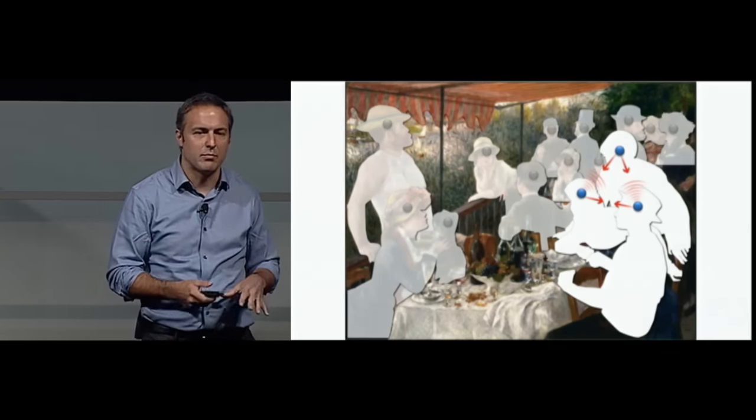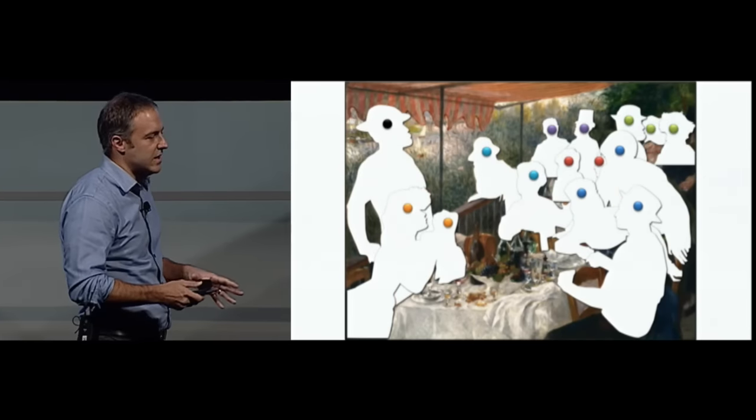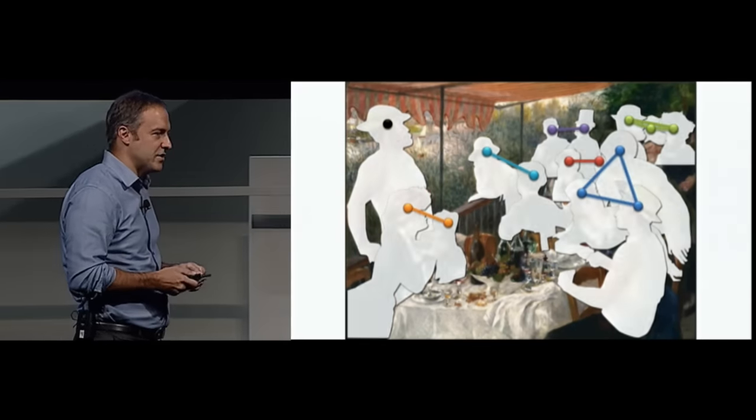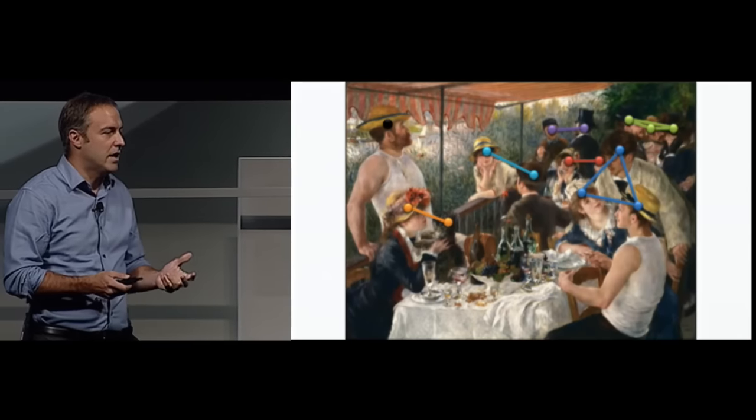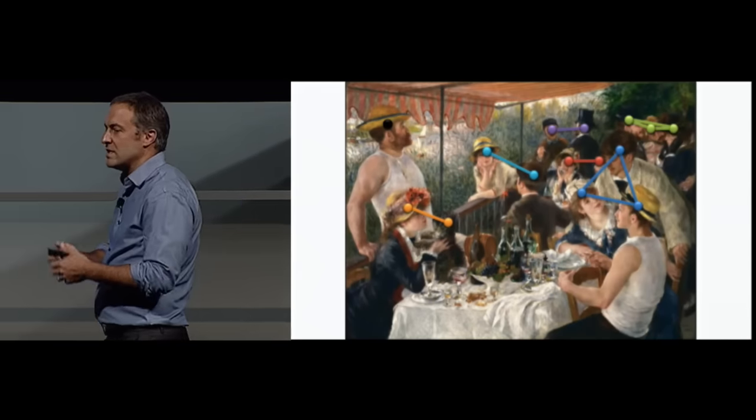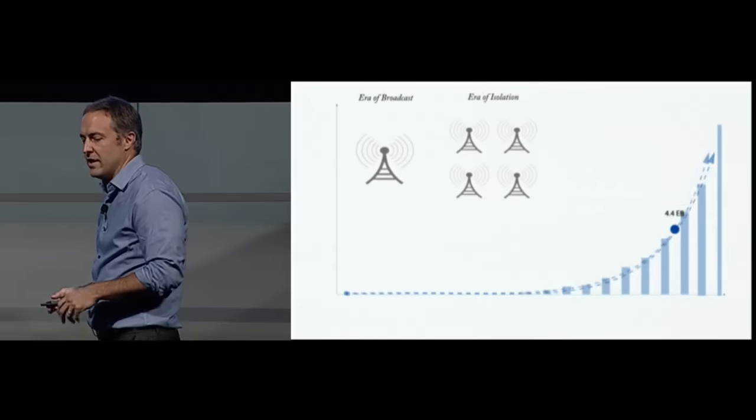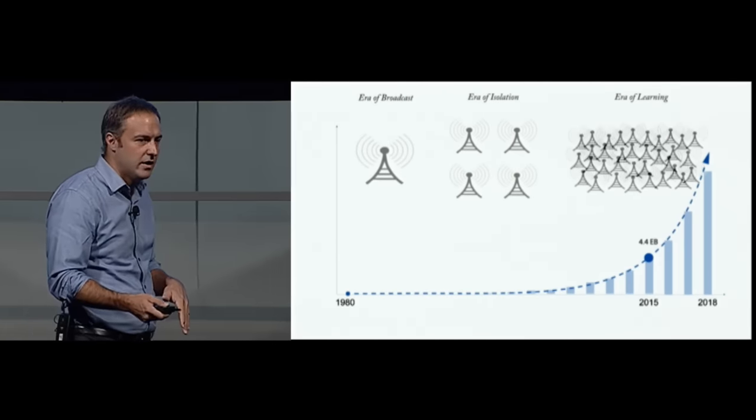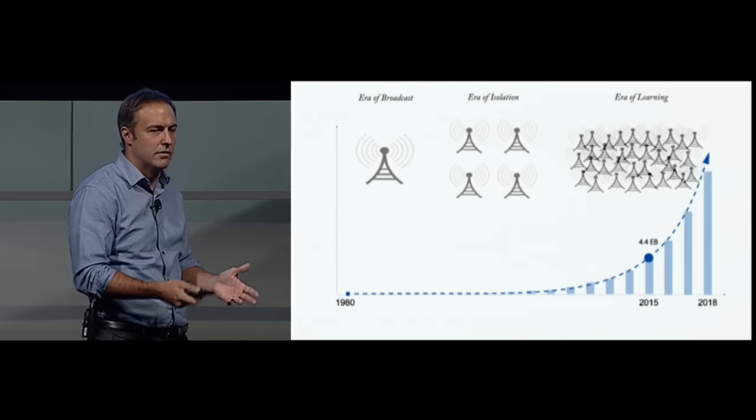That allows us then to separate a complex scene into separate networks. So we can now make a decision. Do we want to join that network? And we can start to see the underlying big picture. When we have that information, it allows us to move from the era of broadcast through the era of isolation that we're in today to what we'll call the era of learning.